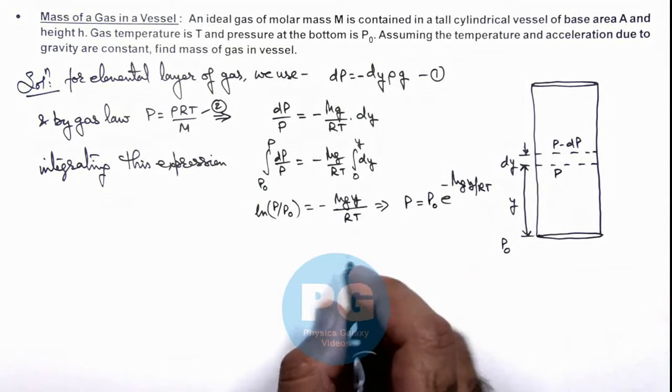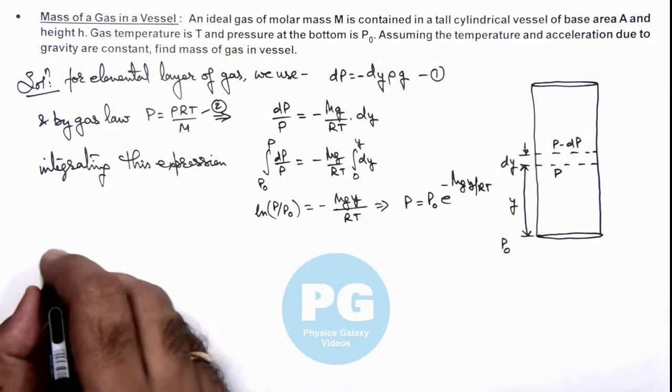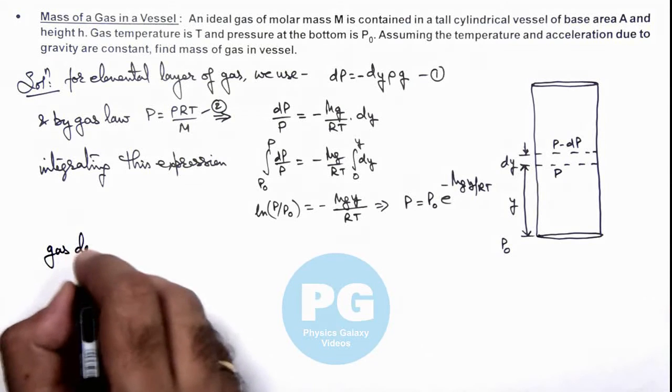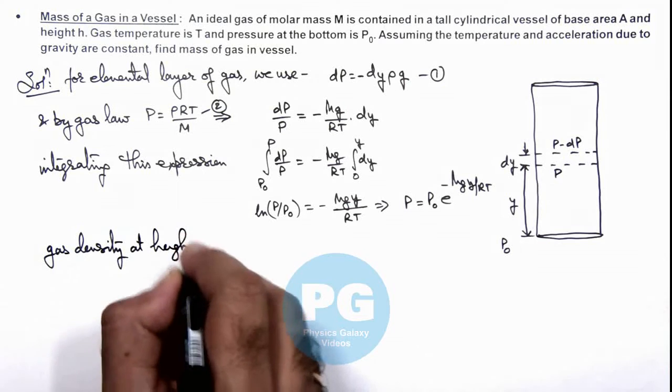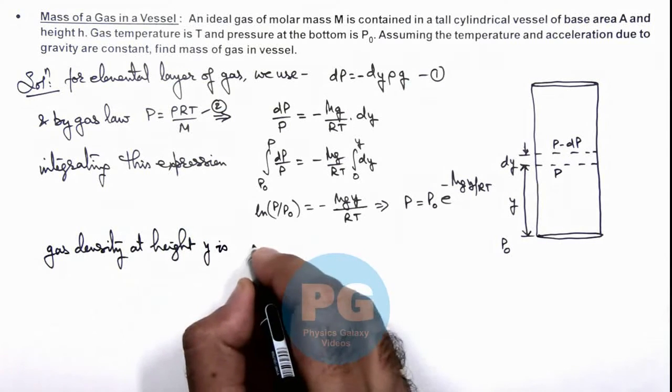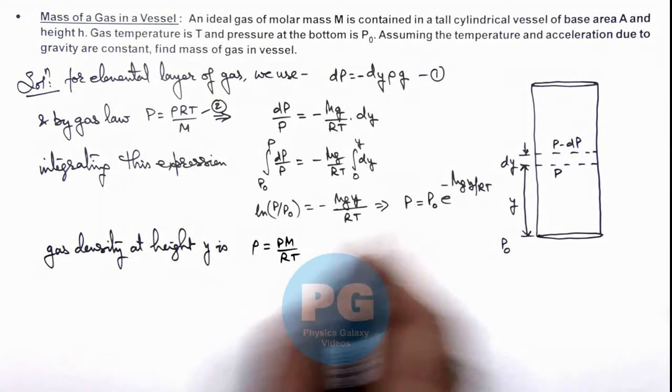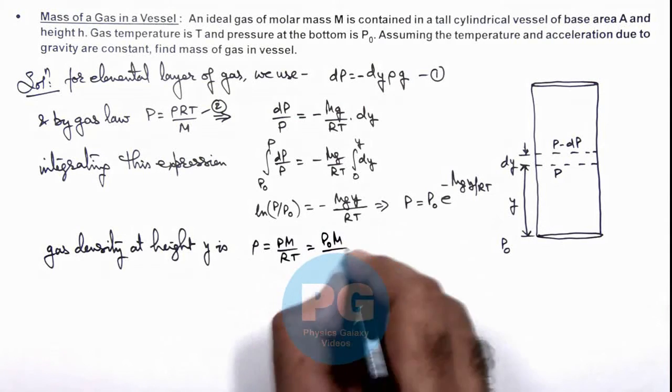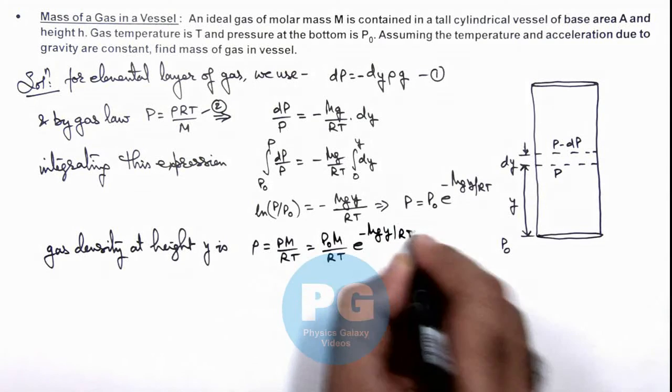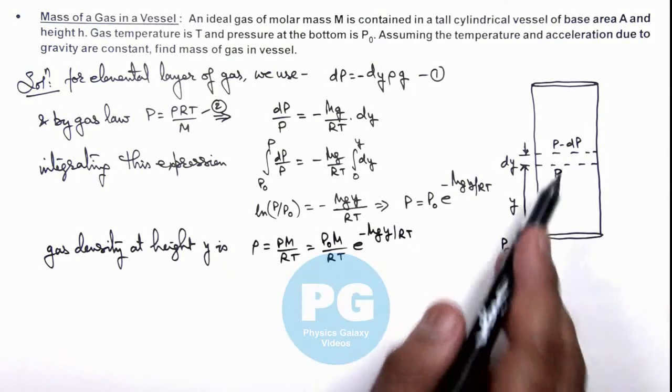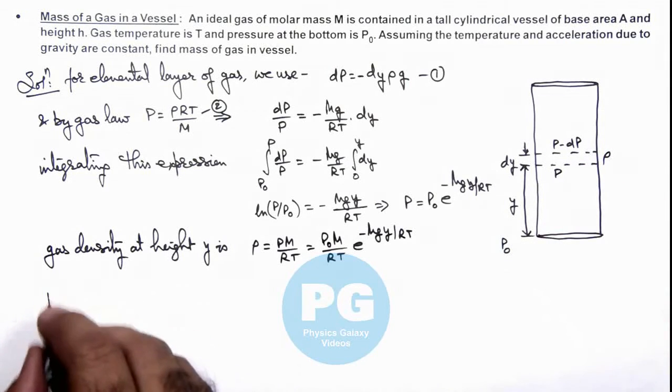So if this is the value of gas pressure at a height y, then using this we can find out the gas density at height y. We can write ρ = PM/(RT), and if we substitute the value of P, this gives us P₀M/(RT) e^(-Mgy/RT). And in this situation, if this is the density of gas ρ at a height y...